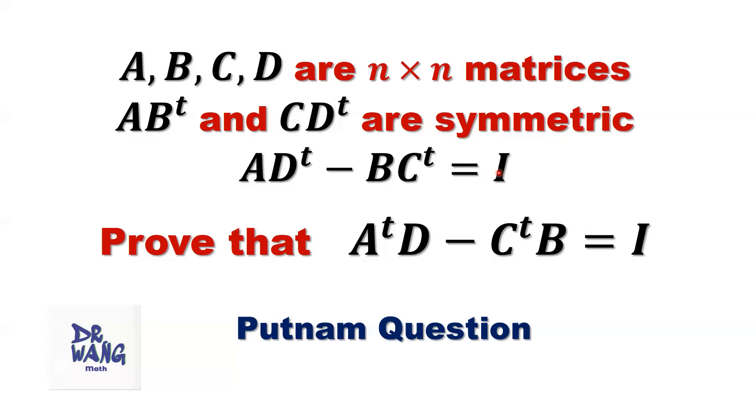This means all entries on the diagonals are ones and others are zeros. The question is, we need to prove that A transpose times D minus C transpose times B equals I.